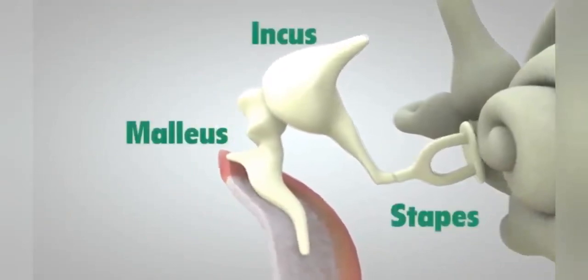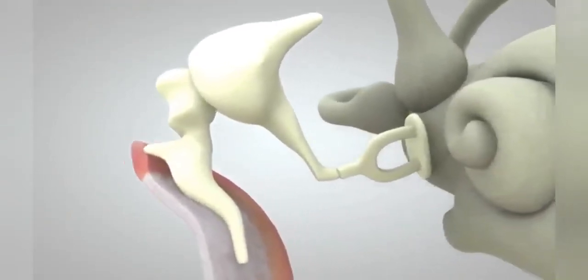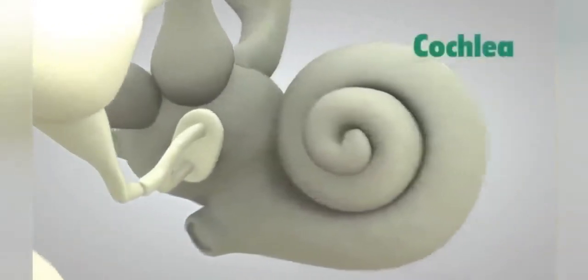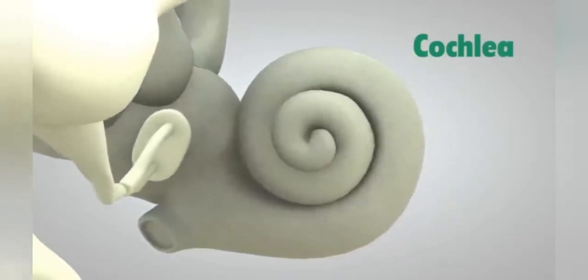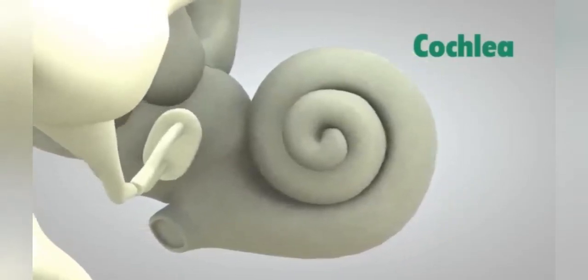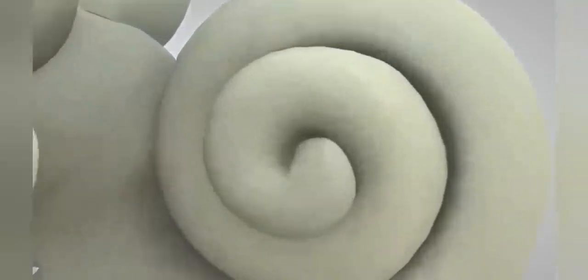These bones amplify or increase the sound vibrations and send them to the cochlea. The cochlea is shaped like a snail and is the size of a garden pea. It is filled with fluid and the sound vibrations make this fluid ripple, which creates waves.